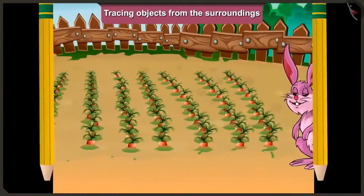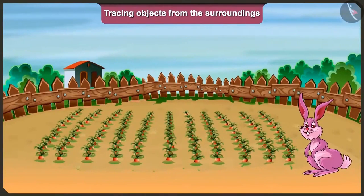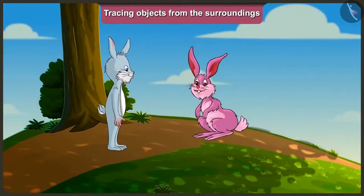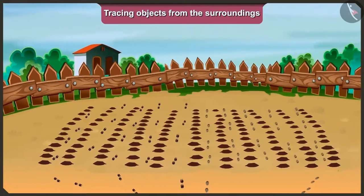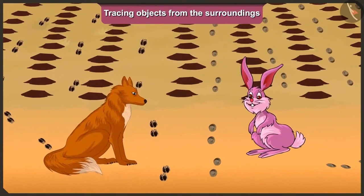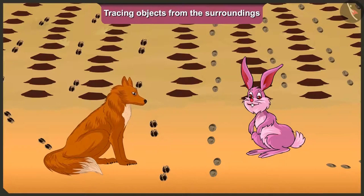So listen carefully. There was a rabbit who had grown very good carrots in his farm. One day, he went to meet his king brother. But when he returned, all of the carrots from his farm were missing. When he saw this, he immediately called his friend, the clever fox. When the fox looked carefully at the farm, he found two types of traces of feet.